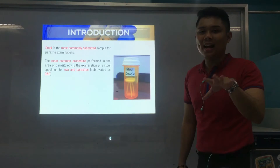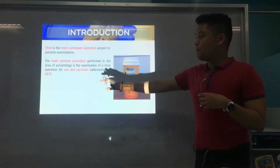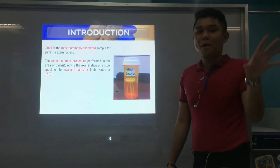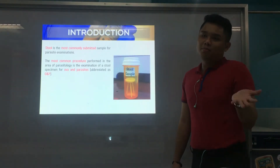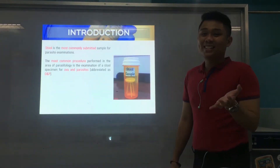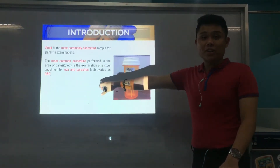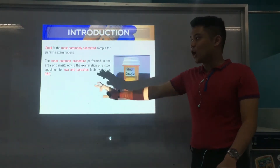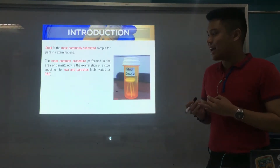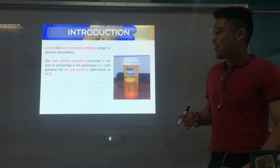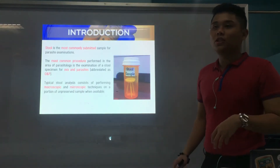Since stool is the most common sample, the procedure that is also most common in the parasitology lab is your ova and parasites — ONP. You look for ova, which are the eggs of your nematodes, eggs of your worms. And parasites — when you say parasites, the other parasites like protozoa, other parts like proglottids of cestodes, and all that. So if you encounter ONP in your internship, it stands for ova and parasites.